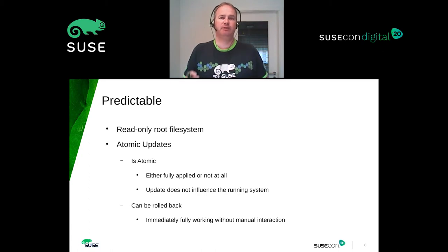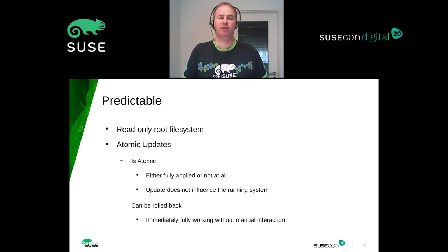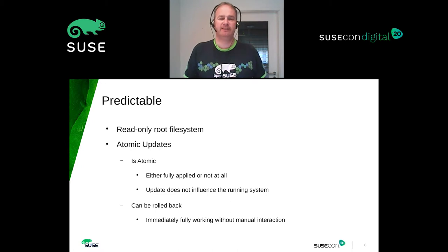Predictability is something we fulfill with a read-only root file system, and to be able to update it we introduce atomic updates. Atomic means in this case either the update is fully applied or not at all. So a typical problem — like updating an RPM where the post-install section goes wrong, leaving you with an undefined system because both old and new RPM are installed in an undefined state — cannot happen.